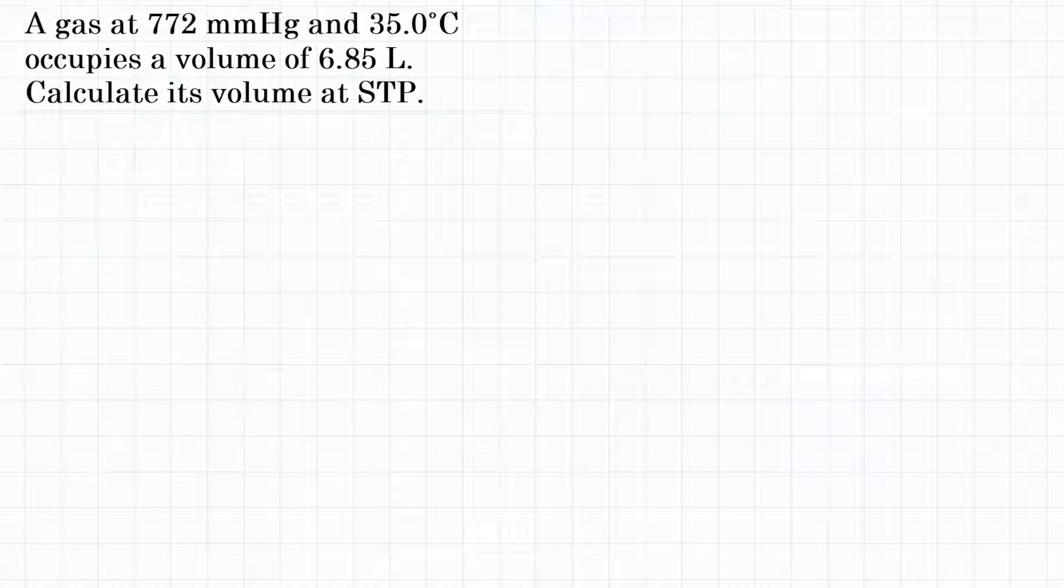Alright everyone, the problem says a gas at 772 millimeters of mercury and 35.0 degrees Celsius occupies a volume of 6.85 liters. Calculate its volume at STP.